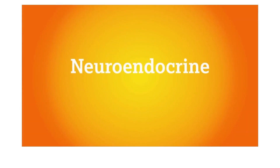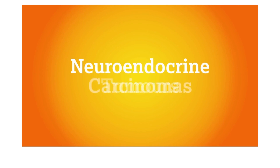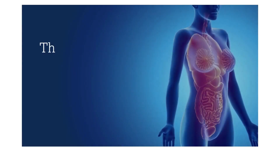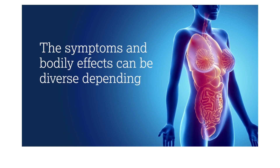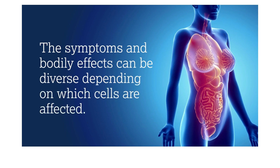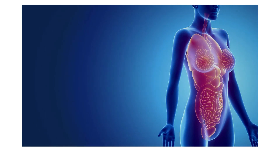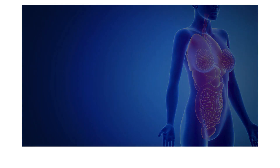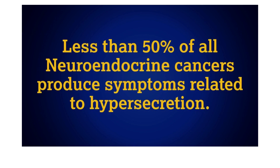When neuroendocrine cells undergo malignant transformation, they can develop into either neuroendocrine tumors or neuroendocrine carcinomas. The symptoms and bodily effects can be diverse depending on which cells are affected and how their secretory function is altered. It is worth noting that although cell appearance and growth rate change, not all neuroendocrine cancers will have abnormal hormone production. In fact, less than 50 percent of all neuroendocrine cancers produce symptoms related to hyper-secretion.